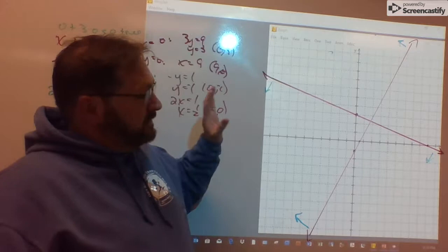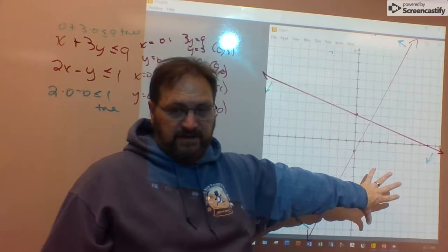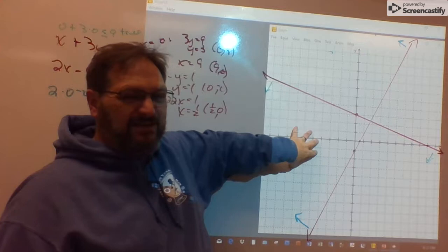The first inequality shades this region here and this region here. The second one shades this one and this one. This one gets shaded both times. That's where we find our solution.